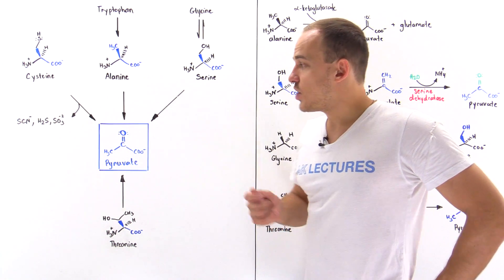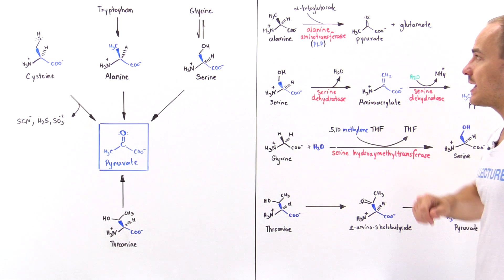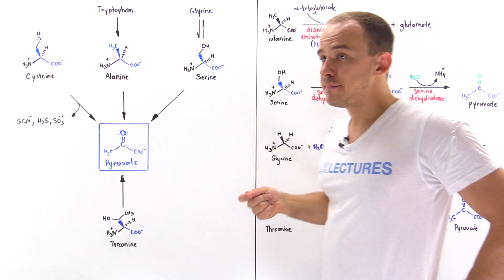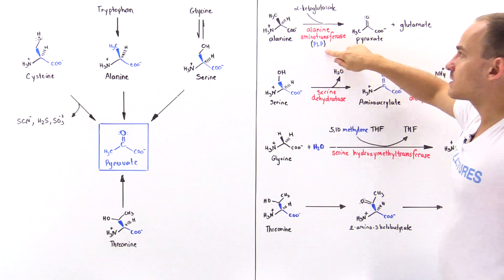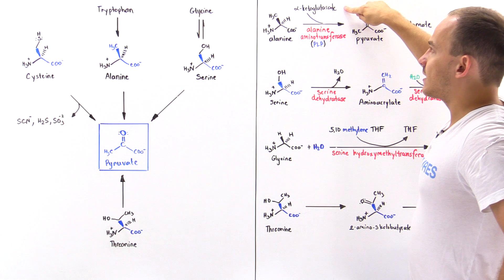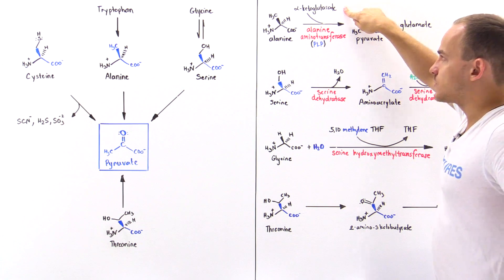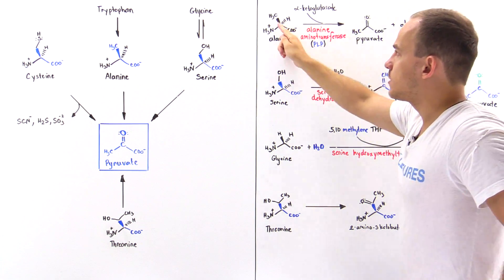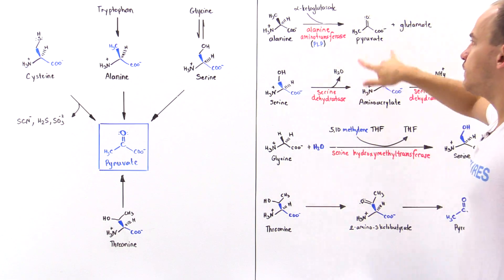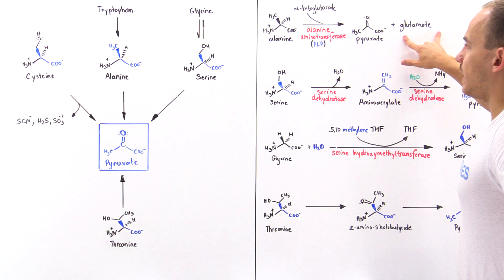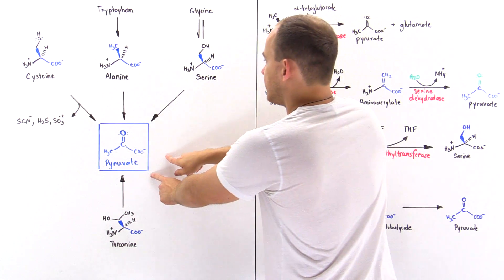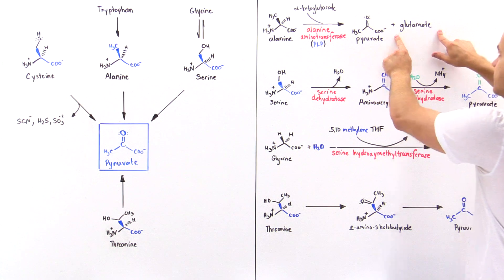So this enzyme utilizes a coenzyme PLP, pyridoxal phosphate. Alanine basically reacts with alpha-ketoglutarate. We essentially transfer the amino group from alanine to alpha-ketoglutarate. We form pyruvate and glutamate as a result, and the pyruvate we see is formed in a single step. Now in the second step, not shown here, we have the glutamate.